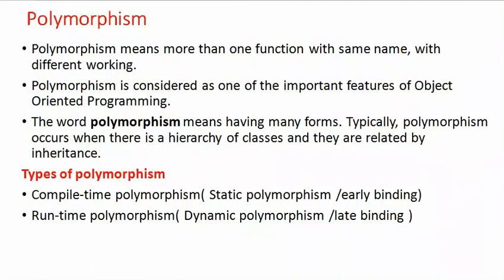Polymorphism means more than one function with the same name but with different working. It is considered one of the important features of object-oriented programming. The word polymorphism means having many forms. Typically, polymorphism occurs when there is a hierarchy of classes related by inheritance. There are two types of polymorphism.